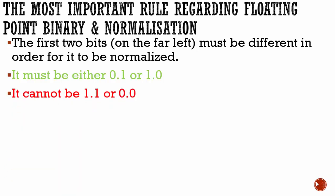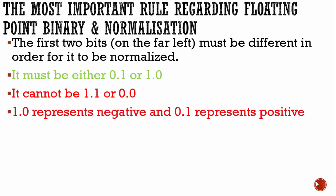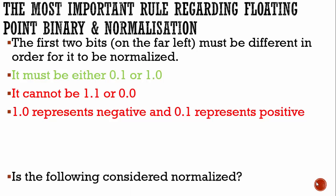It cannot be 1.1 or 0.0. When you're working with the mantissa, it's in two's complement. This means 1.0 is going to represent a negative number and 0.1 represents a positive number. The point of using a mantissa and exponent is so you can get really large numbers while getting rid of some unnecessary numbers.